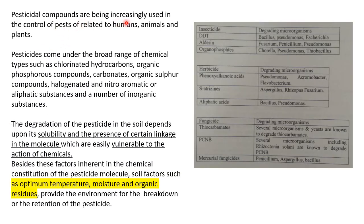Pesticidal compounds are increasingly used in the control of pests related to humans, animals, or plants. They are synthetic and chemically derived, and therefore harmful. Pesticides come under a broad range of chemical types such as chlorinated hydrocarbons, organic phosphorus compounds, carbonates, organic sulfate compounds, halogenated or nitro aromatic or aliphatic substances, and a number of inorganic substances.